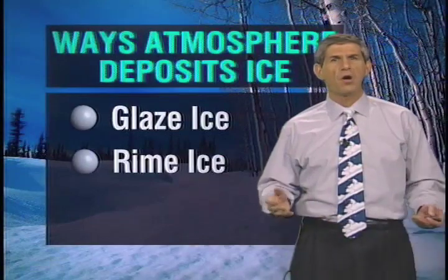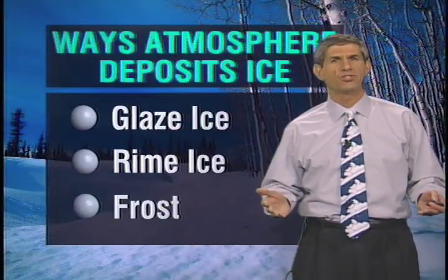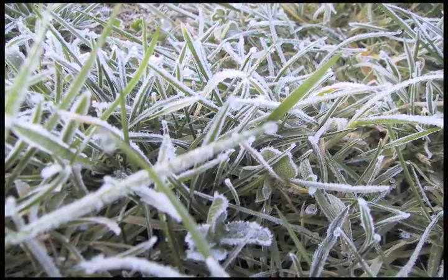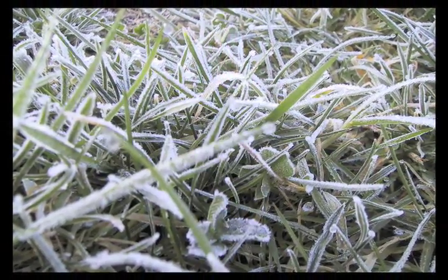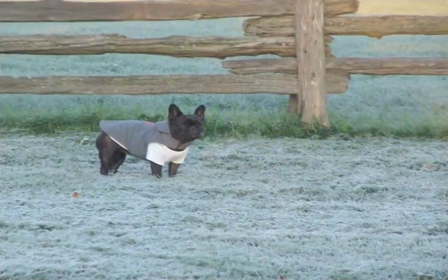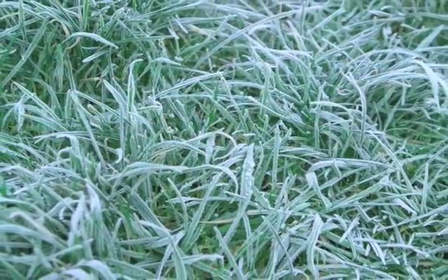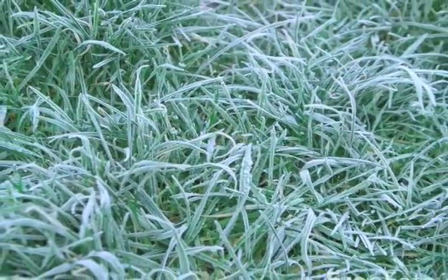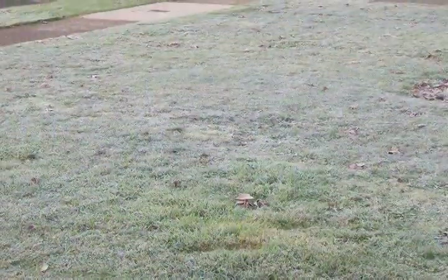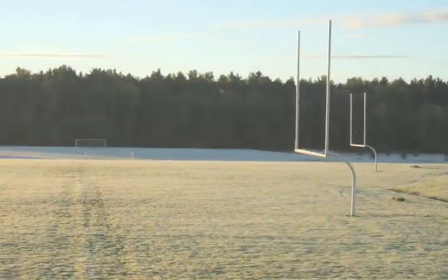Finally, frost is a third way that the atmosphere can deposit ice on the surface. It's different in that frost forms when water vapor directly deposits onto an object without going through the liquid phase. You typically get this frosty layer of ice crystals on grass, trees, and other objects on clear, calm nights when air near the ground is moist and cools below freezing.